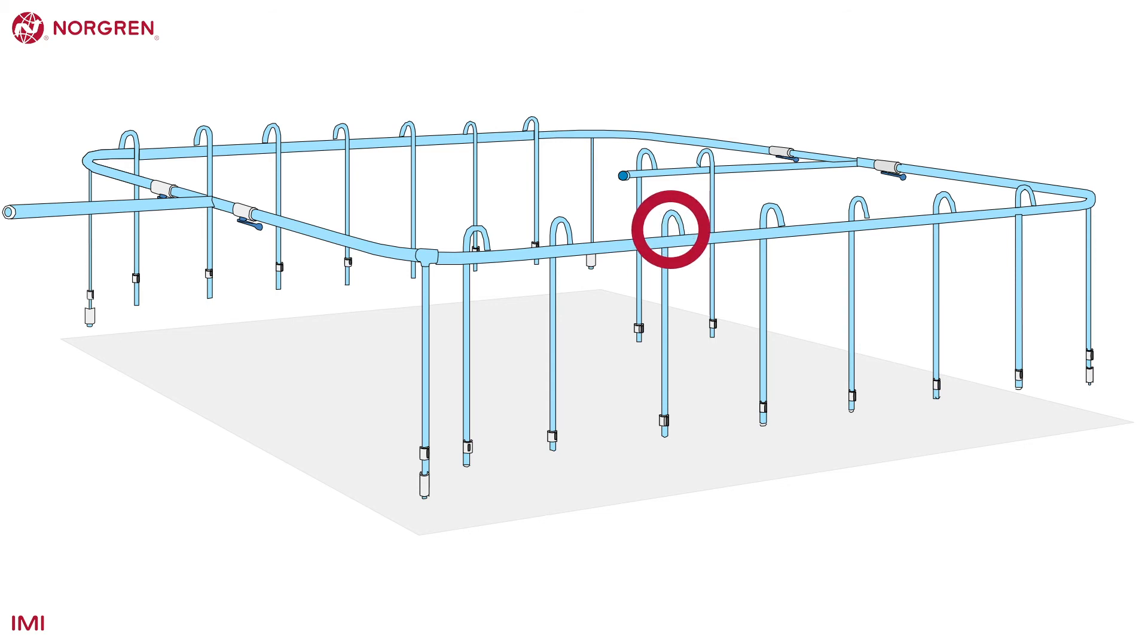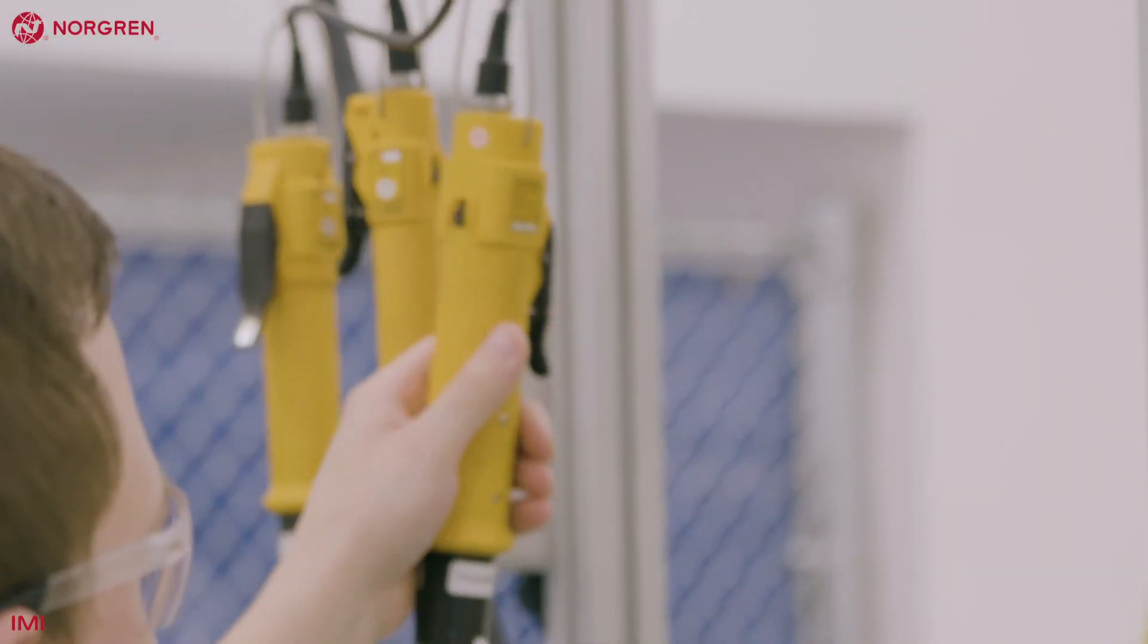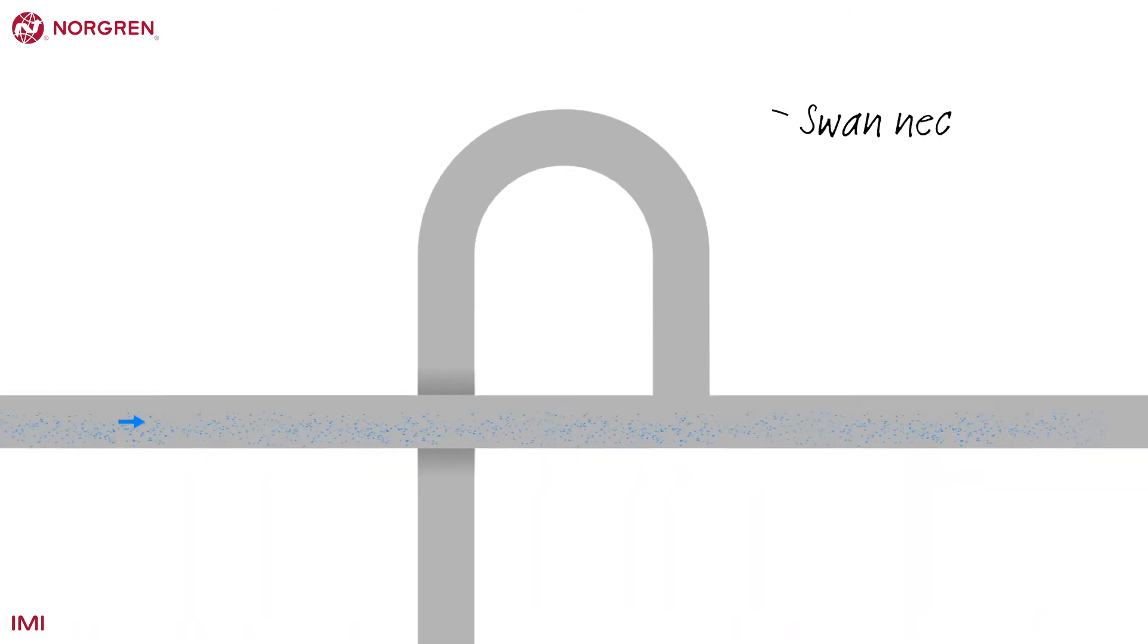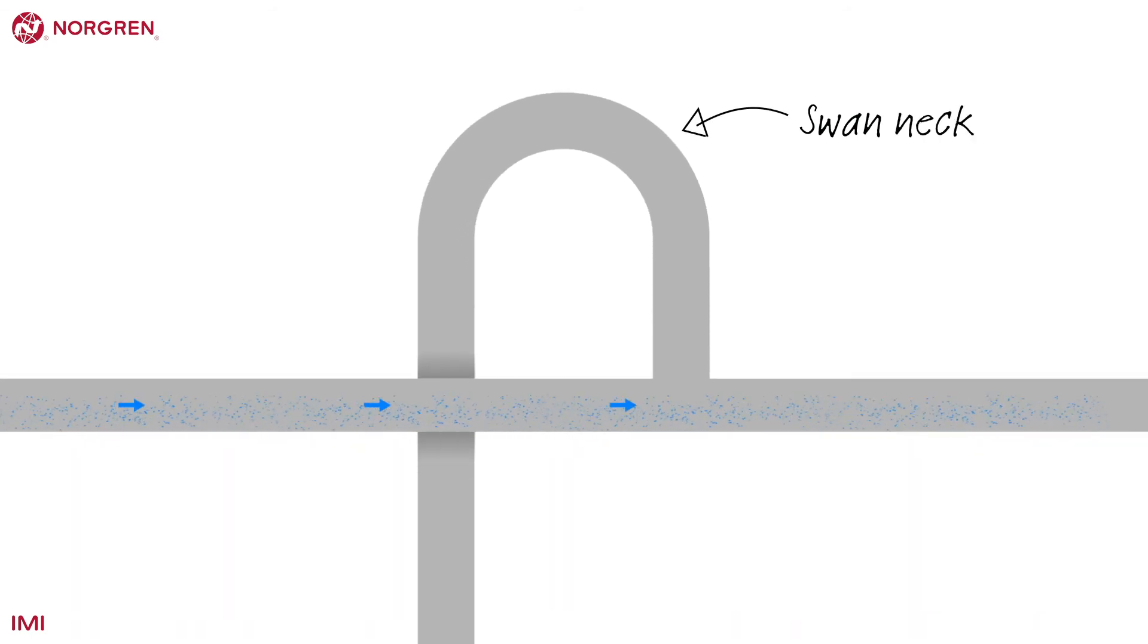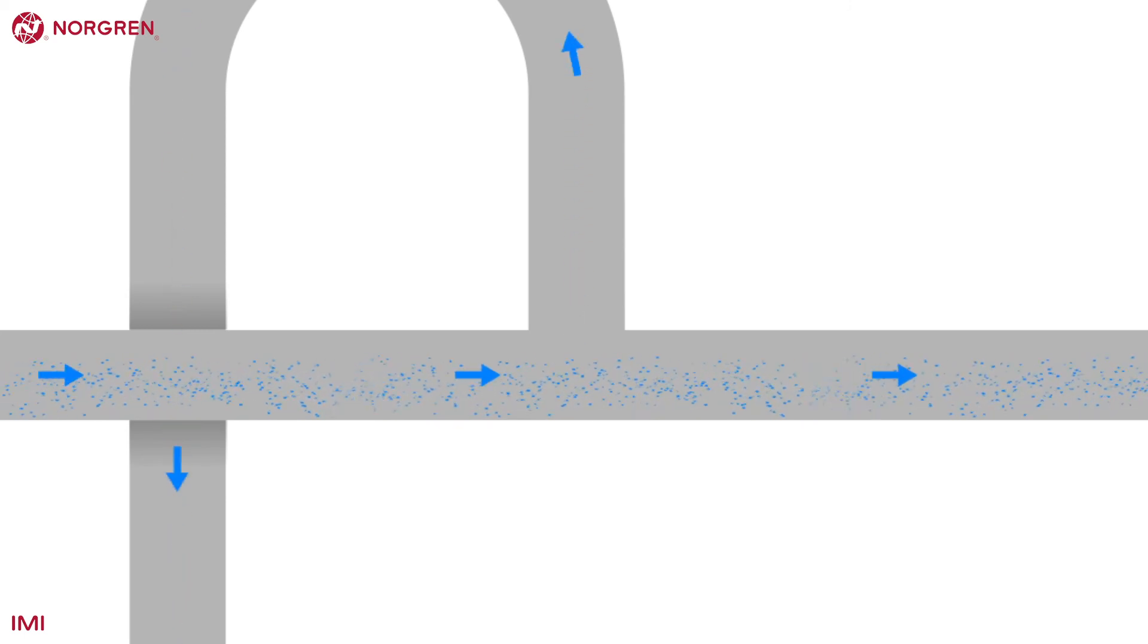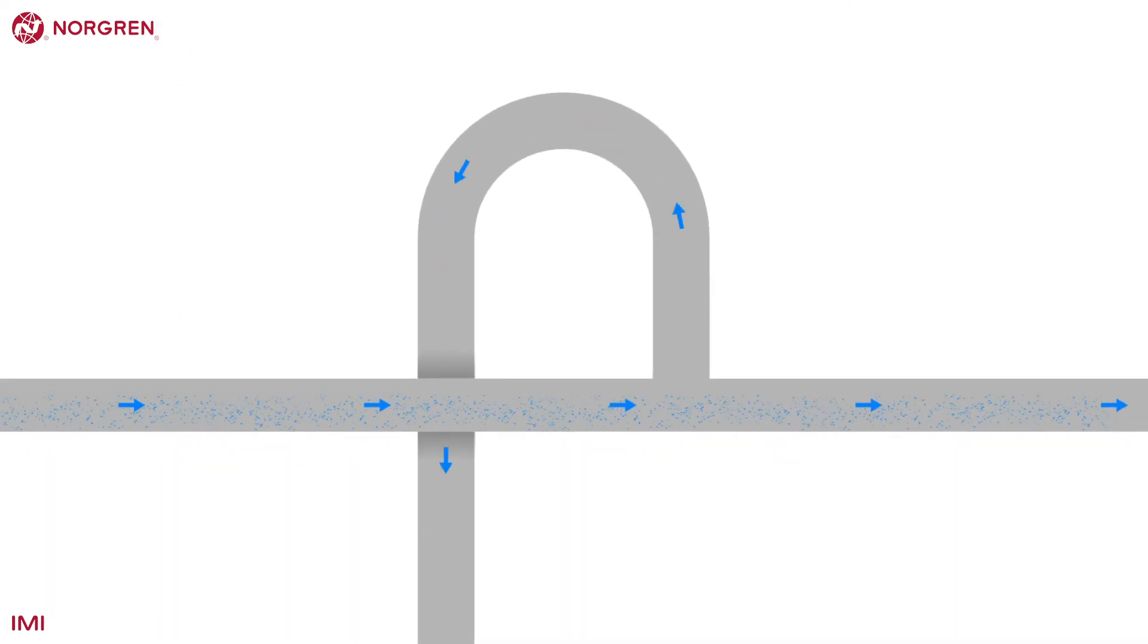The take-off points are where air is taken from the ring main to a point of use, typically a pneumatic tool, machine or bench. Notice the swan neck that comes from the top of the ring main. Taking air from the top will inhibit any fluid entering the downpipe and the swan neck provides the smoothest route for the air. Hard angles or elbows will slow airflow.